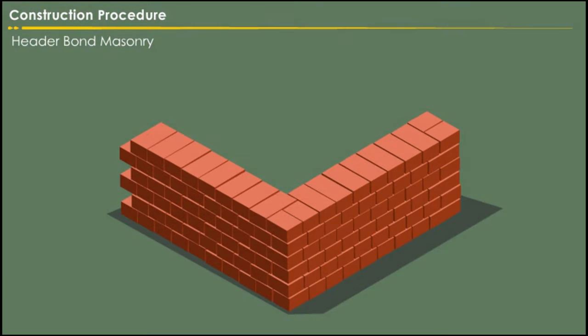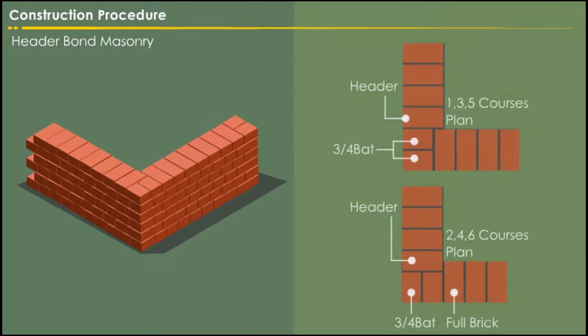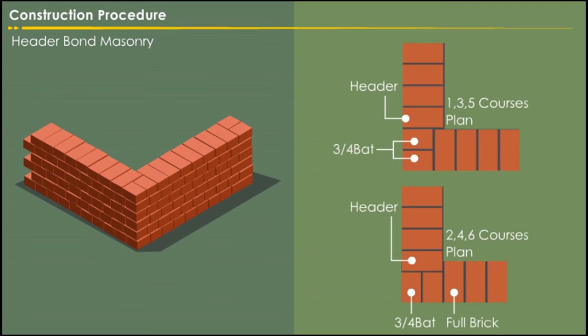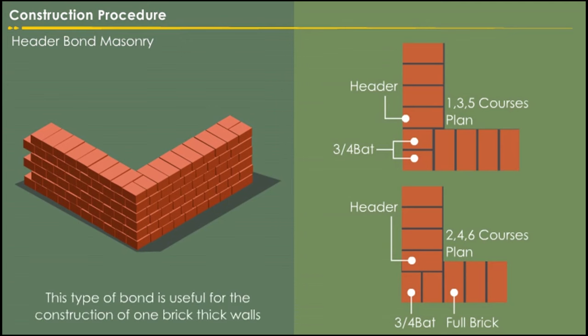In header bond brick masonry, all the bricks are arranged in the header courses. This type of bond is useful for the construction of one brick thick walls.